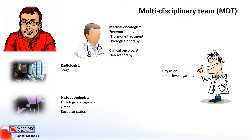Then we have the oncologist. In the UK, oncologists tend to be split into two different camps. On one hand, we have medical oncologists, who specialise in chemotherapy, hormone treatment, and biological therapy. Then we also have another specialty known as clinical oncology. Clinical oncologists, on top of making decisions about chemotherapy and some other treatments, also specialise in radiotherapy.